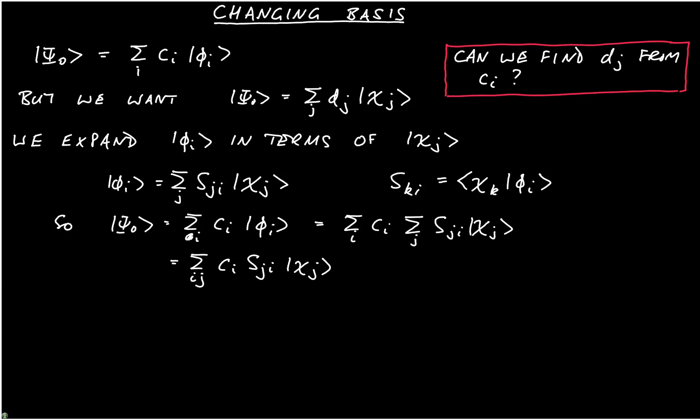And if we want to, we can now deduce that d_j is given by the sum over i of s_ji multiplied by c_i. And notice that this takes the form of a vector matrix multiplication.